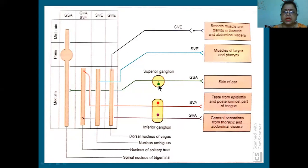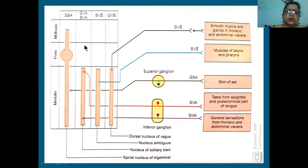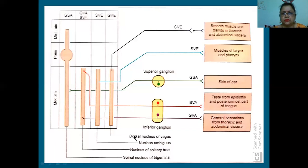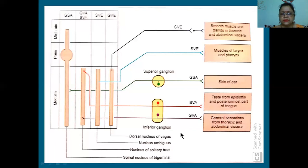See the chart properly. These are small letters because we haven't taught you the brain yet. Most of the nuclei present for vagus are in the medulla. What are the nuclei important for vagus nerve? Dorsal nucleus of vagus, nucleus ambiguus, nucleus of solitary tract, and spinal nucleus of trigeminal nerve.